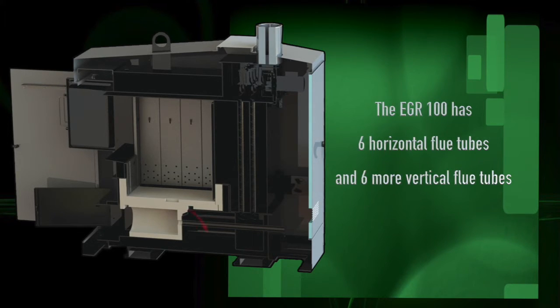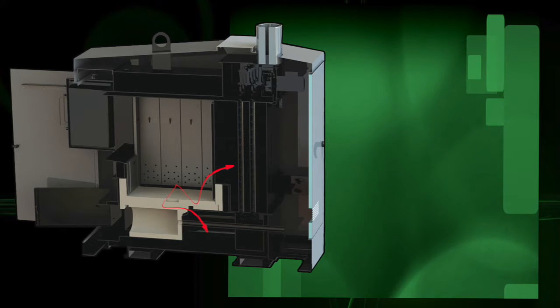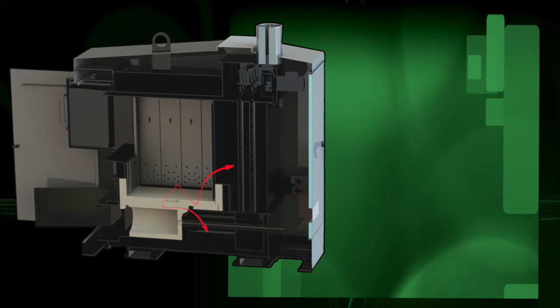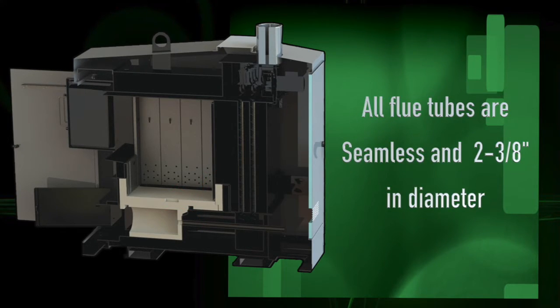The EGR 100 has six horizontal flue tubes and six more vertical flue tubes. On the EGR 250, you will find eight horizontal flue tubes and eight vertical flue tubes. The flue tubes are seamless and are two and three eighths of an inch in diameter.